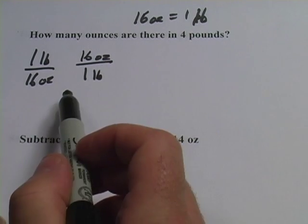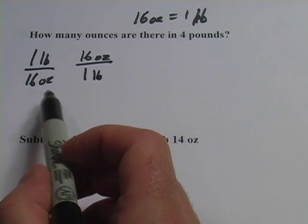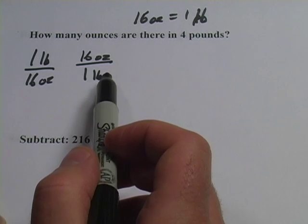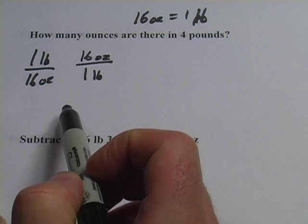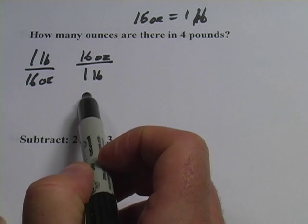Or you could have 16 ounces on top and 1 pound on the bottom. And in various situations, you might need to use one or the other. When you convert from one unit to another, what you do is you multiply by a conversion factor, by a unit multiplier.